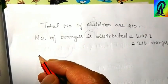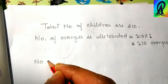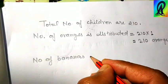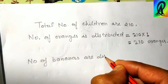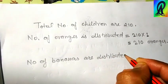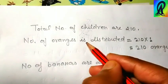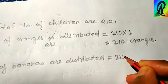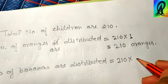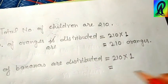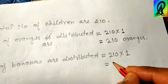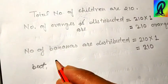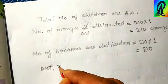Now, number of bananas distributed. Total children are 210, and each child takes one banana, so we multiply 210 by 1 to get 210 bananas. But here is a condition: 38 children do not take bananas.